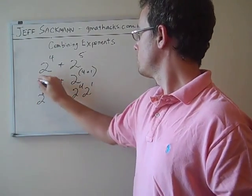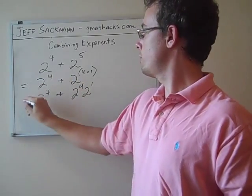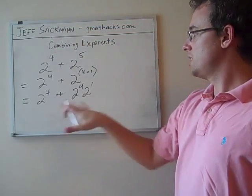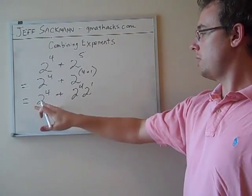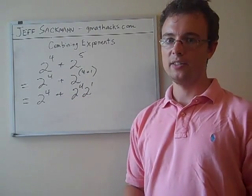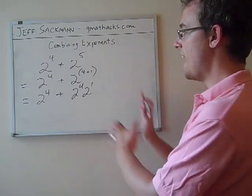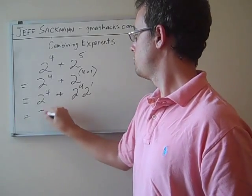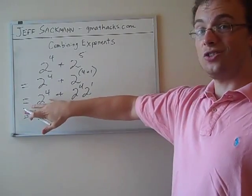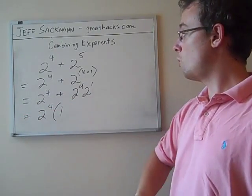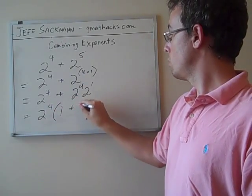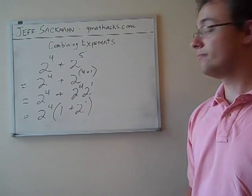So 2 to the 5th can become 2 to the 4th times 2 to the 1st. So now, I'll write in this 2 to the 4th that I left out initially. So this initial expression we were given simplifies to 2 to the 4th plus 2 to the 4th times 2 to the 1st. Now we just apply some basic algebra. We factor out the 2 to the 4th. There's a 2 to the 4th in both terms. When we divide this term by 2 to the 4th, we're left with 1. When we divide this term by 2 to the 4th, we're left with 2 to the 1, or 2.